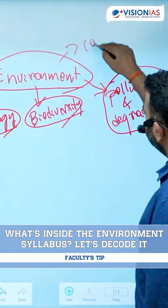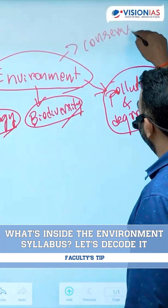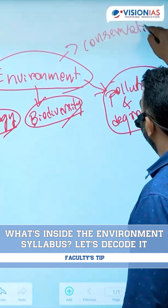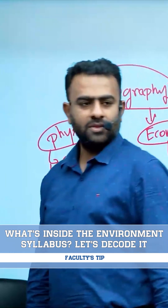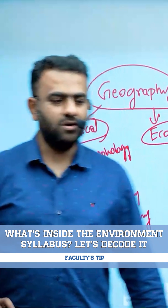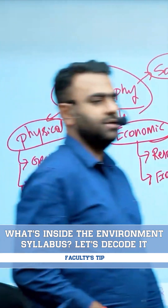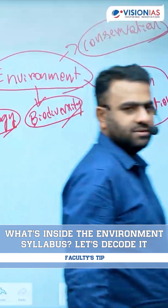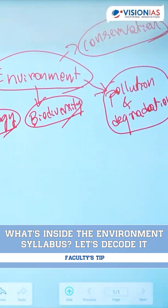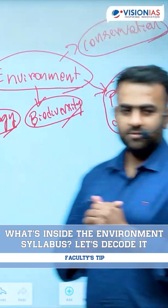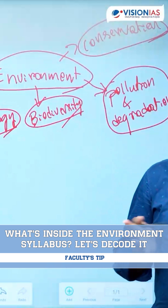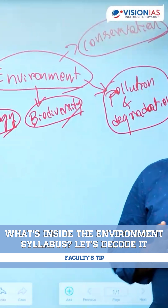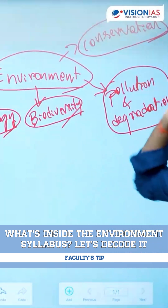There is also an aspect of conservation. What exactly are we doing to protect the environment? We have made many laws, rules, regulations — there are various programs, schemes, conventions, protocols. Have you heard of the Paris Agreement, which is trying to reduce global warming? There is also a Montreal Protocol. All of these come under conservation aspects.